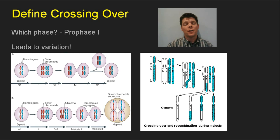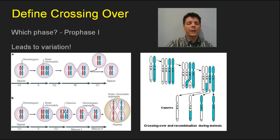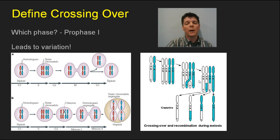Next, I want to define the term crossing over. Crossing over is a really important concept in meiosis because it leads to greater genetic variation. We can see in the process of meiosis that neighboring chromosomes form structures called tetrads, looping around and wrapping around each other. Looking at this image here, those neighboring chromosomes wrap around each other, and this is really important.